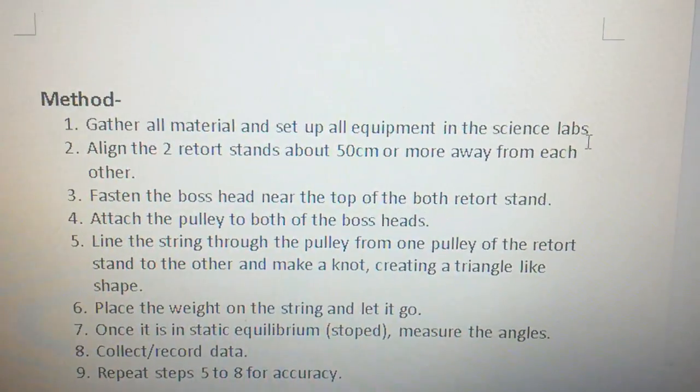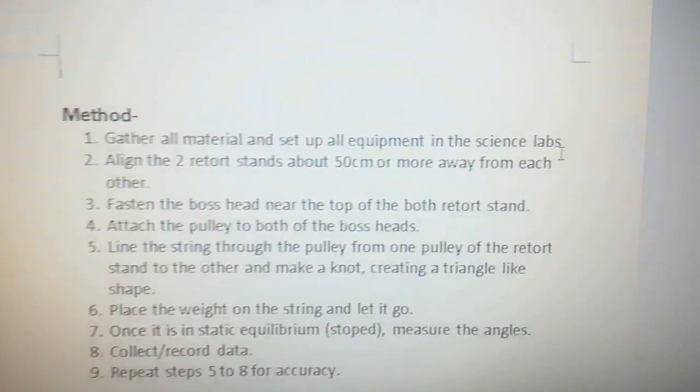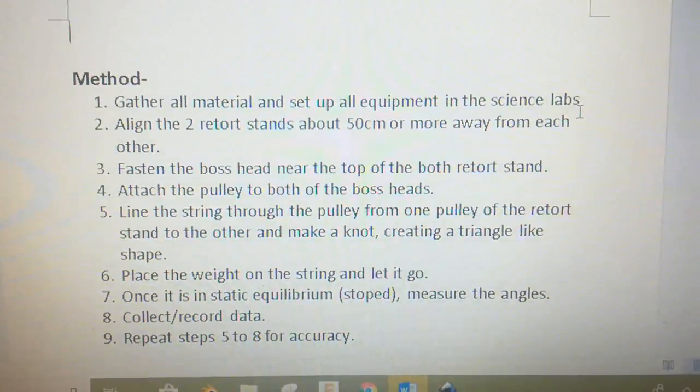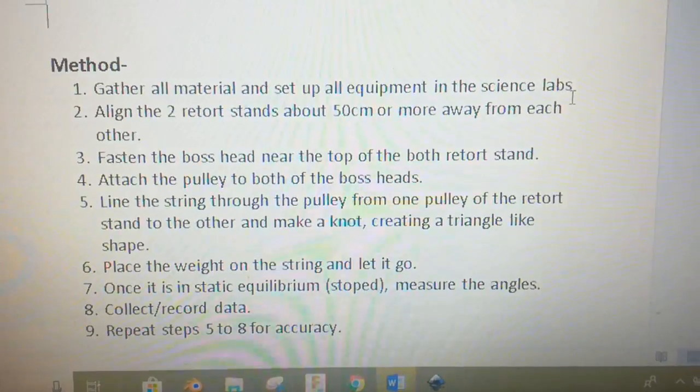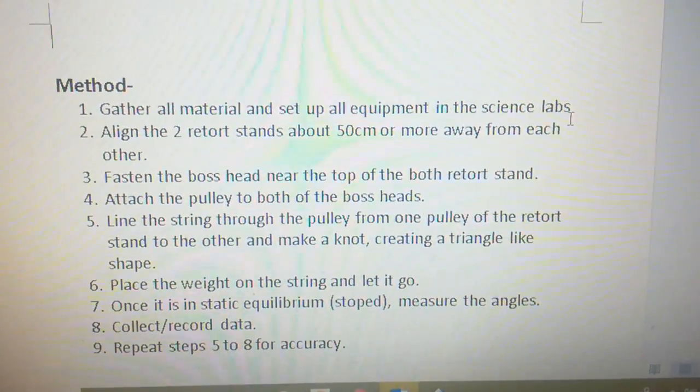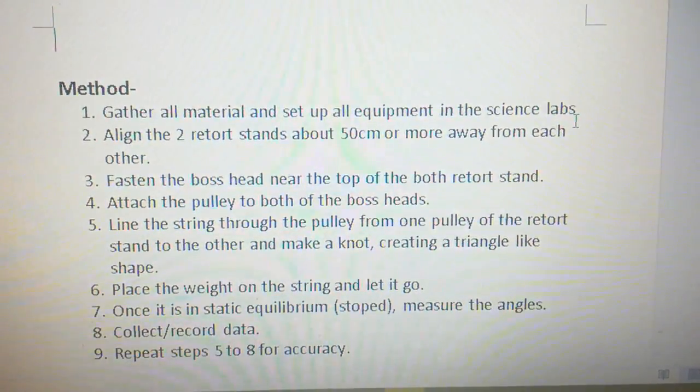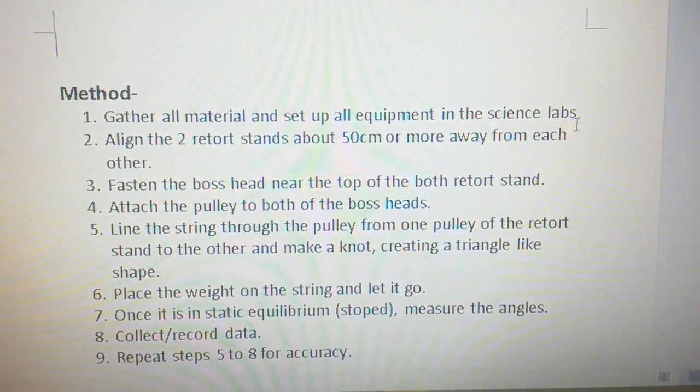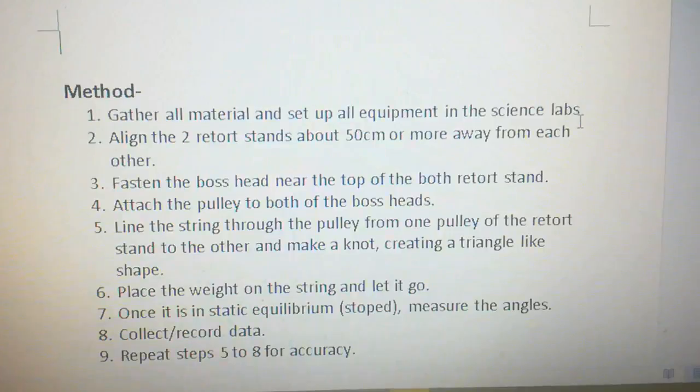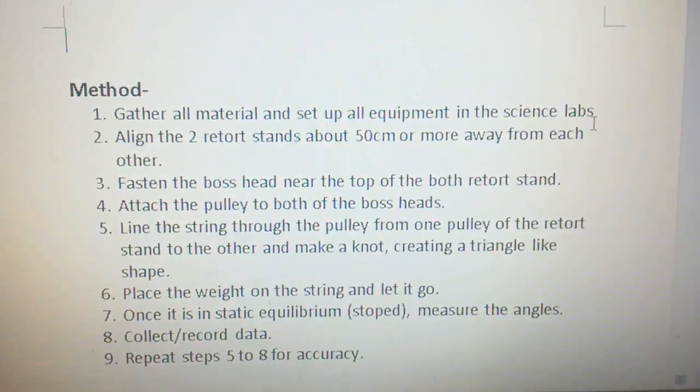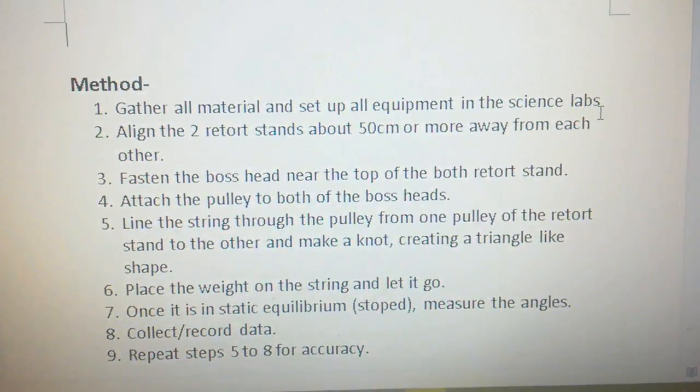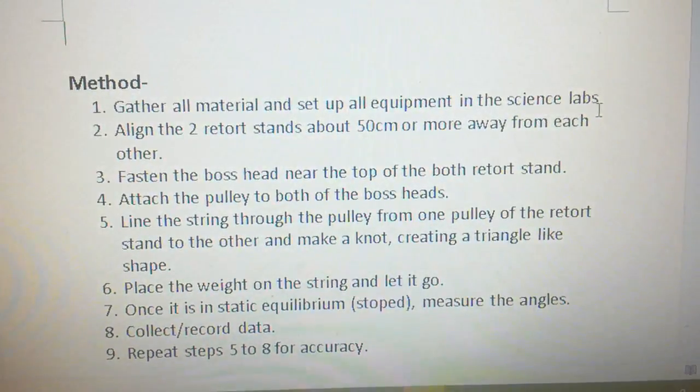Attach both pulleys onto the boss heads. Line the strings through the pulleys and then tie a knot to make a circle. Place weights on the string and let it go. Once it is in static equilibrium, like stopped, measure the angles.